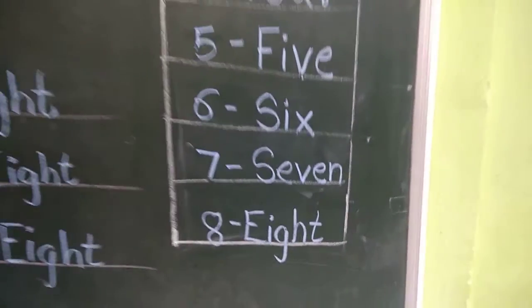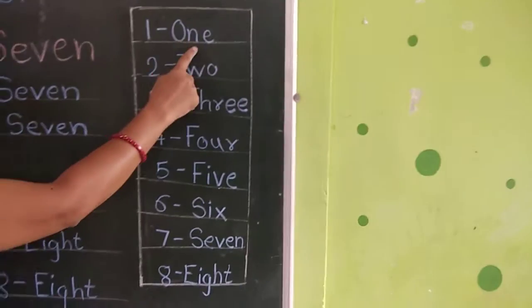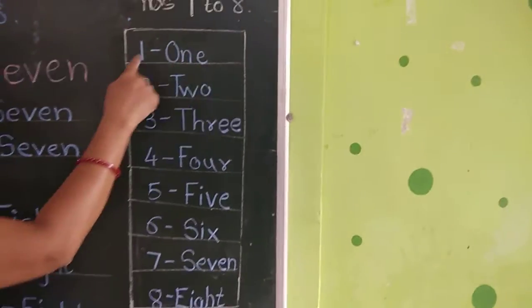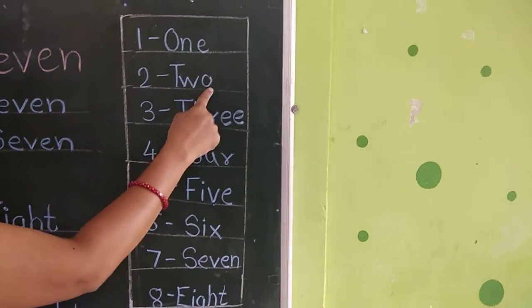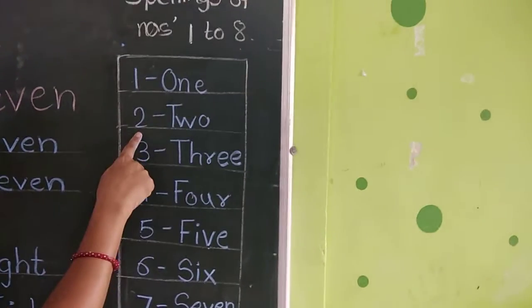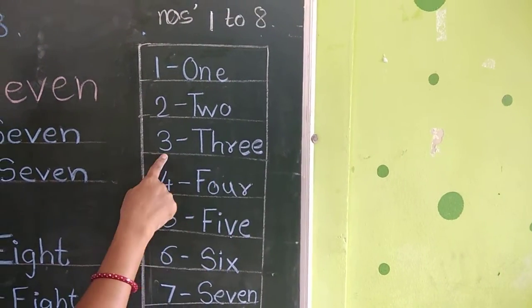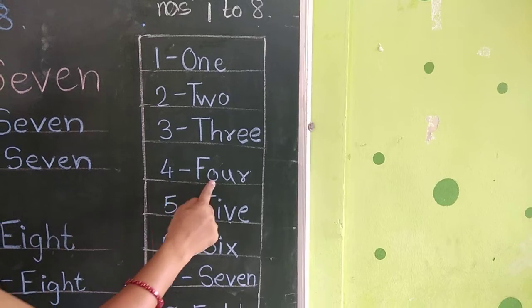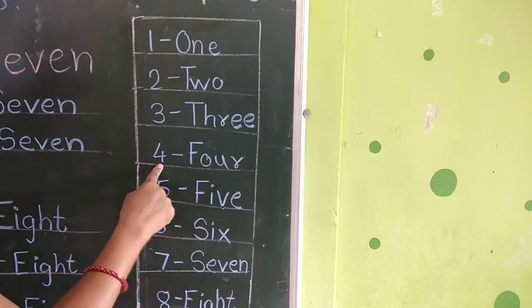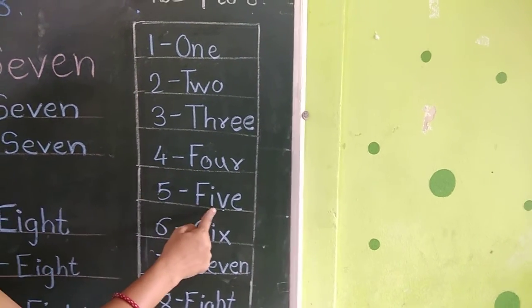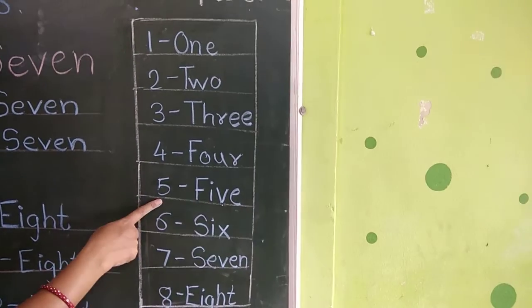We will revise these spellings again. O-N-E, 1. T-W-O, 2. T-H-R-E-E, 3. F-O-U-R, 4. F-I-V-E, 5.